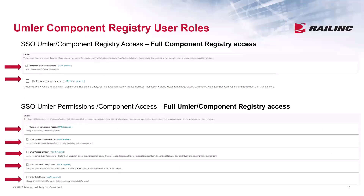To gain access to Component Registry, users must first have a Railinc single sign-on account, and then you will need to request the permissions shown here. For full Component Registry access, you need the Component Maintenance access and UMLR access for query. Many Component Registry users may also perform equipment maintenance, and they will need a few additional roles, such as the UMLR access for maintenance, UMLR advanced query access, and UMLR bulk upload access.